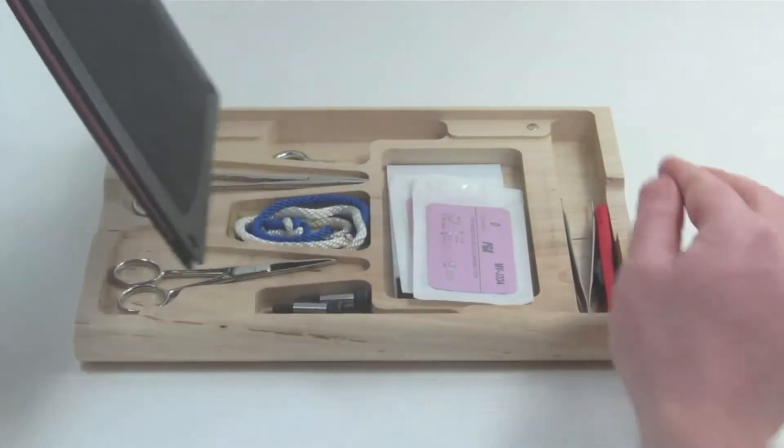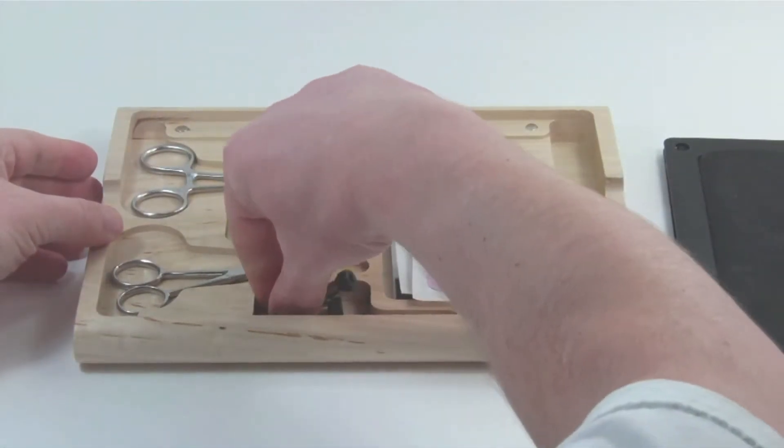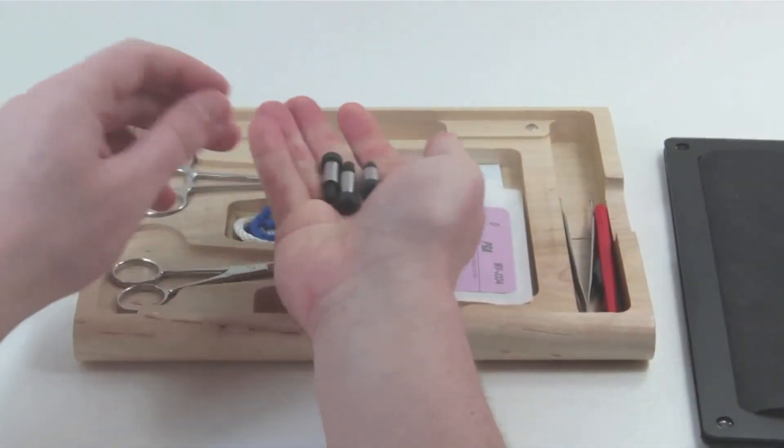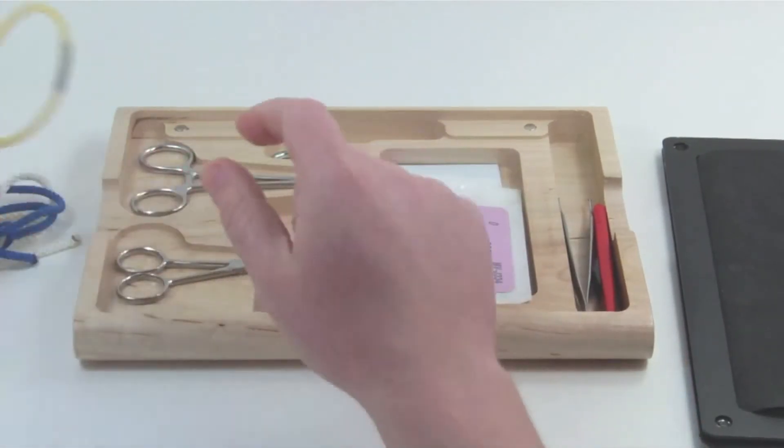Inside of the Sews Kit is everything you need to practice two hand ties. There are three posts, a rope, and a ligation band.